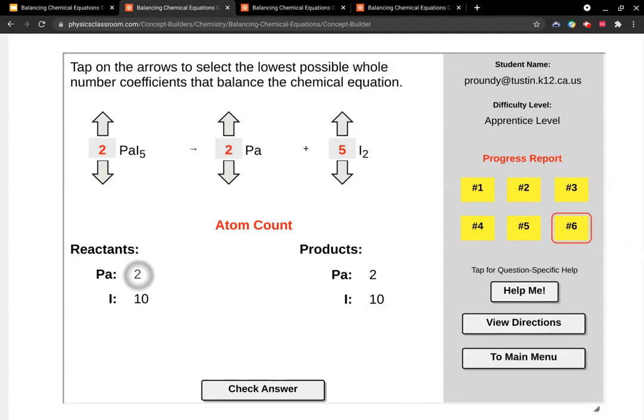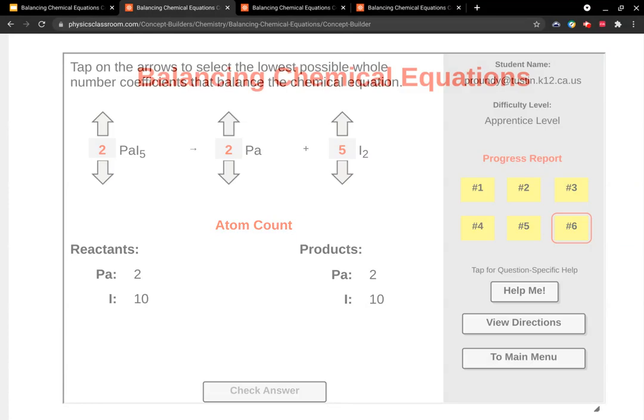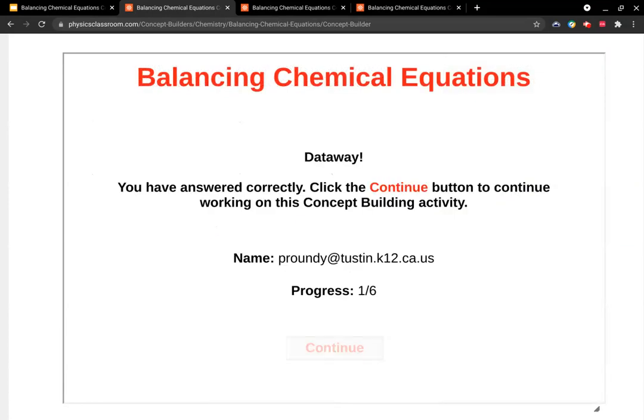Notice that we started by, actually, we had the protactinium with one each. We had that balanced. But then when we balanced the iodine, that messed up the protactinium. So then we had to go back and rebalance it. Just make sure you're being careful about that. On this one, as you can see, it's counting the atoms for you. Check answer. And voila! Dataway.